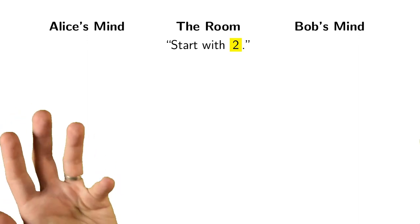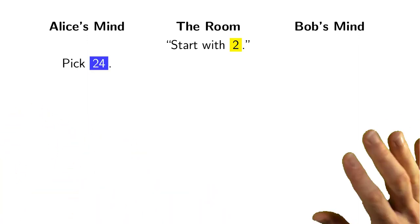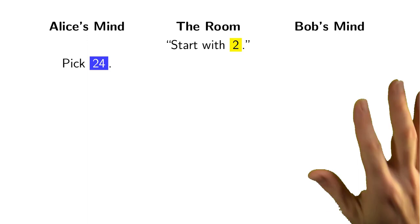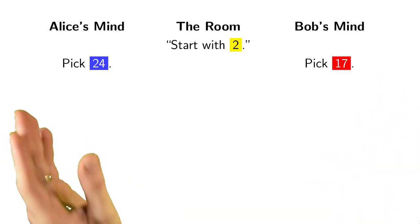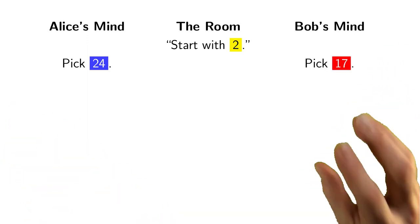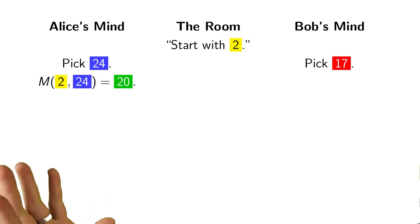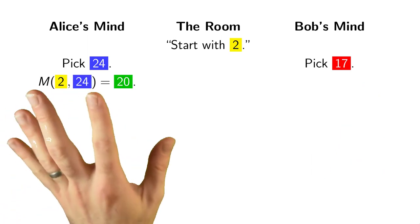And then Alice picks a random number. Let's say it's 24. And Bob will pick his own random number, 17. And crucially, only Alice knows the number 24. And only Bob knows the number 17.